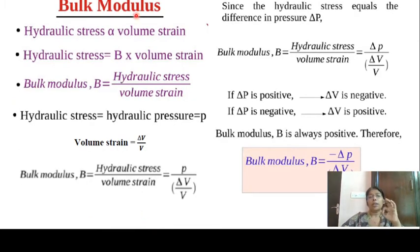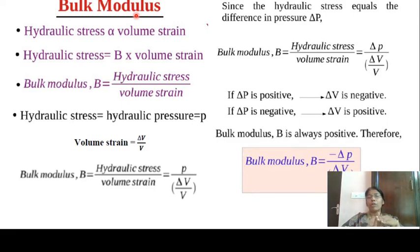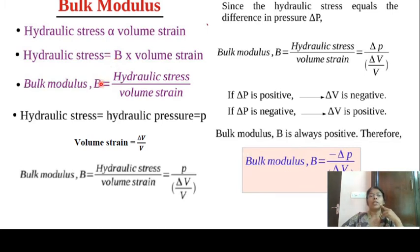So, shearing stress equals G·θ. That covers shear or rigidity modulus. The three elastic moduli are: Young's modulus, shear modulus (or rigidity modulus), and bulk modulus. Hydraulic stress is proportional to volume strain, and that proportionality constant B is called the bulk modulus. So B equals hydraulic stress divided by volume strain.